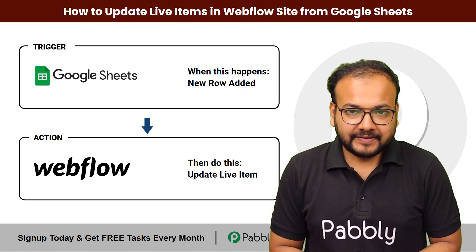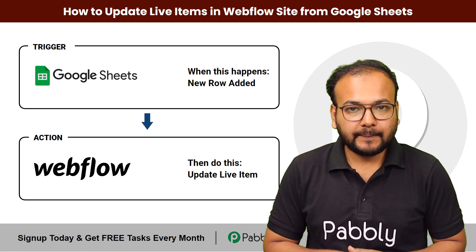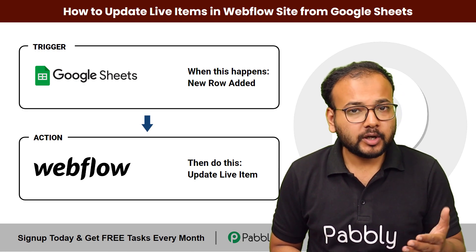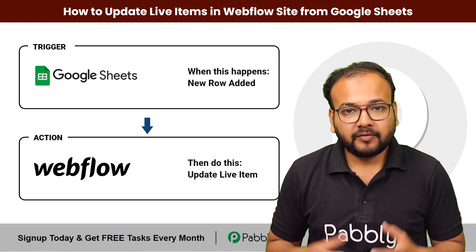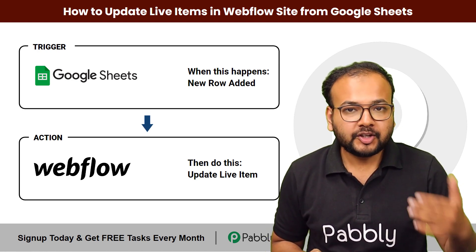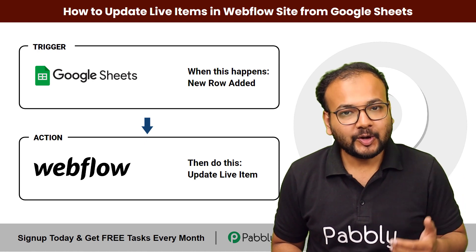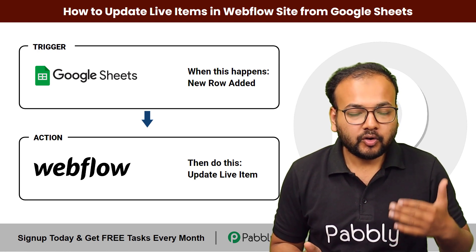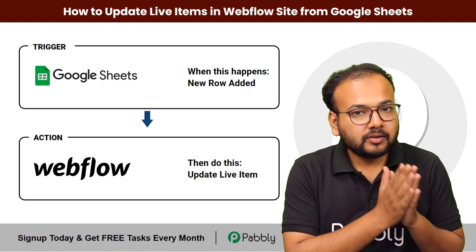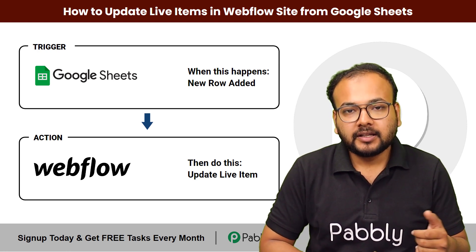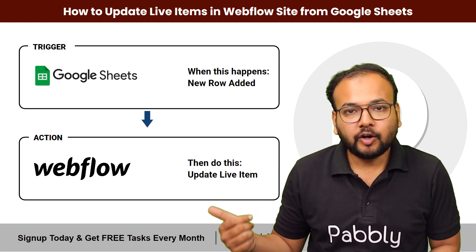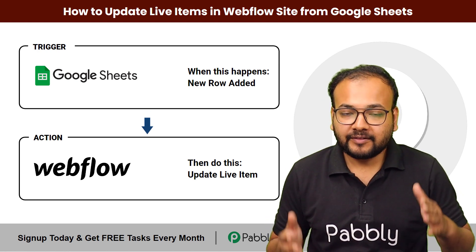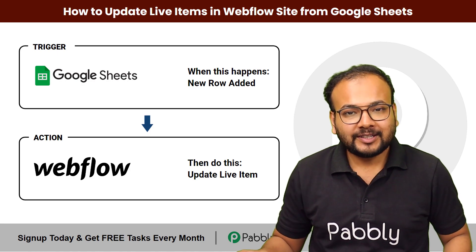Hey guys, welcome back. In this video you will learn how you can update the live items of your Webflow website automatically from your Google Sheets. If you want to keep your website's content fresh without much manual hassle, you can use this automation — you just have to add the live item IDs and the data you want to update in a Google Sheets spreadsheet, and the live item will be updated automatically inside Webflow. You can set up this whole automation without any coding, so without further ado, let's begin.